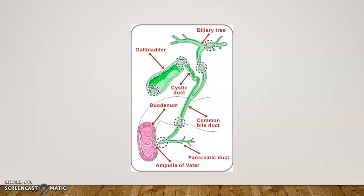The gallbladder holds a substance called bile. Bile is created by the liver, stored in the gallbladder, and used to help us digest and emulsify fats. Down in the bottom left you can see the small intestines.